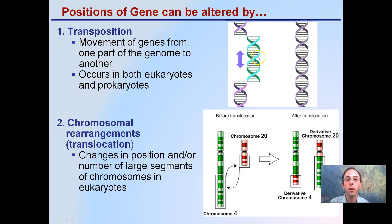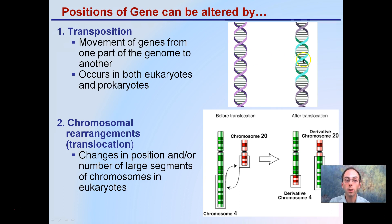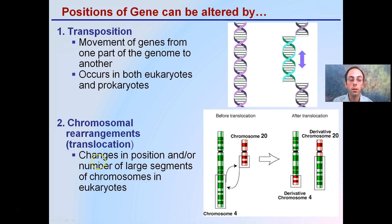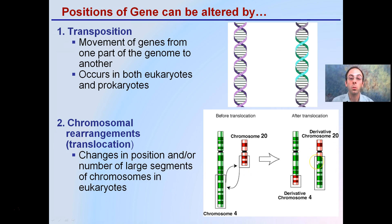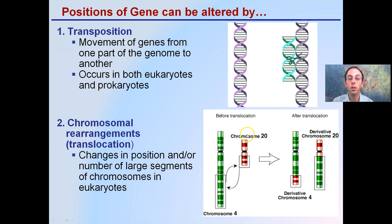Two other types: transposition is moving genes from one part of the genome to another — splicing it out and putting it in elsewhere — and this can occur in both eukaryotes and prokaryotes. Chromosomal rearrangements or translocations change the position and/or the number of segments in a chromosome in eukaryotes. For example, a piece of chromosome 20 is cut and put into chromosome 4, while a piece of chromosome 4 is cut and put into chromosome 20. The DNA on the cellular level is all the same, but it's mixed up — and since the cell goes looking for particular proteins in specific chromosomes, having them moved is going to cause negative effects.